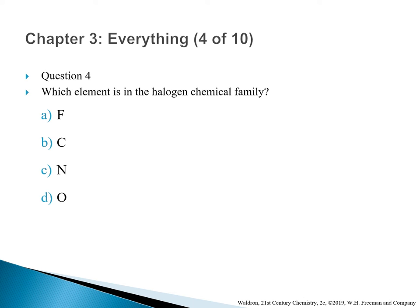Question 4: Which element is in the halogen chemical family? A. Fluorine. B. Carbon. C. Nitrogen. D. Oxygen. The correct answer is A — fluorine. Halogens are in group 17 in the periodic table. Find group 17 — it begins with fluorine. So the correct answer is A.